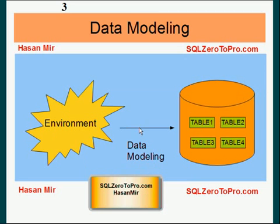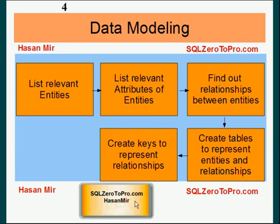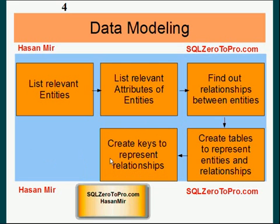I'm going to show you the right way of going through the process of exploring the environment and then extracting the right entities from the environment before you finally create the tables. What you do is: first, you list all the relevant entities in the environment. In coming tutorials I'm going to tell you what entities are — in short, entities are things of importance in the environment. Not all things are relevant, because you need to look at what kind of application you are developing or what kind of software you're writing. You list all the relevant entities and then you list all the relevant attributes of those entities that would be needed in the software that you are developing.